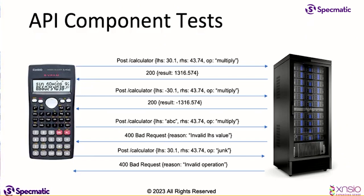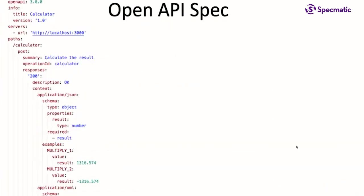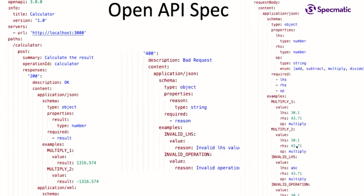These two here at the bottom are trying to play around with the data types — the signature of your API — and verify whether the signature works if you send something wrong. Generally, these are captured in something like an OpenAPI specification, which is the calculator's OpenAPI specification.